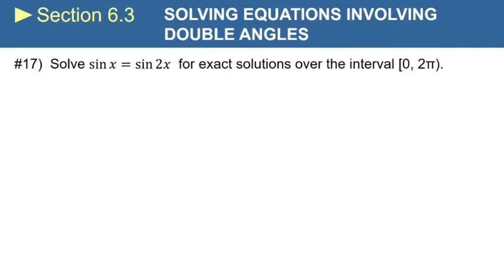Now let's go ahead and look at number 17 from the same section. This one says solve sine of x equals sine of 2x, again for exact solutions over the interval from 0 to 2π. So I'm going to start by exchanging sine of 2x for its double angle identity, and there's only one choice this time. Sine of 2x has to be 2 sine x cosine x.